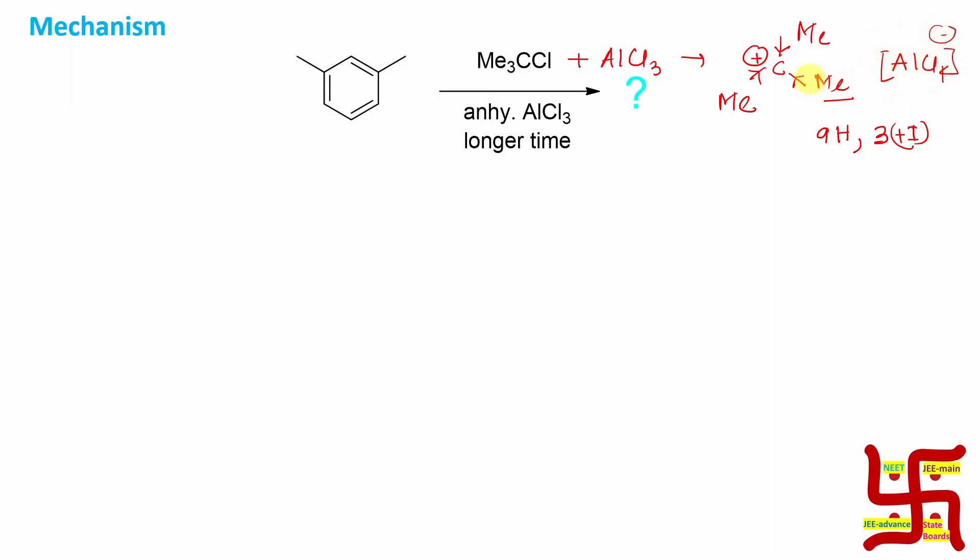Now in this case, this carbocation will act as the electrophile and it will react with this benzene nucleus. Now, the question is there are two positions in competition actually - one position is this, another is this. So where is the reaction expected to occur?